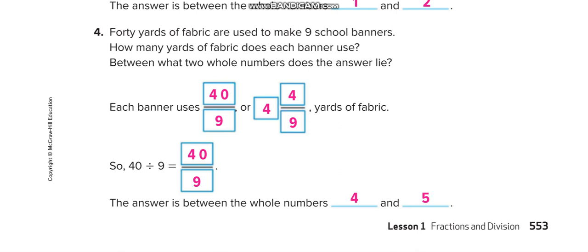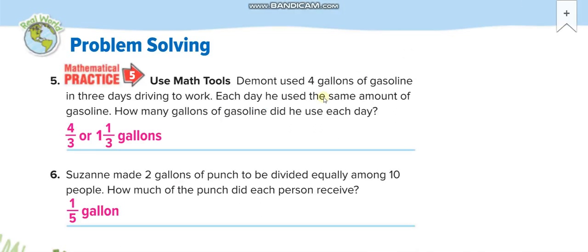Next example: someone used four gallons of gasoline in three days driving to work. That gives us four over three. How many threes fit into four? One, with a remainder of one — so the answer is 1 and one-third.